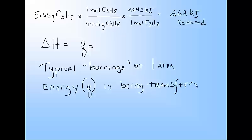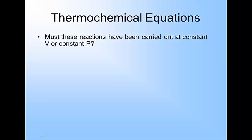So where is it all going? Well, it depends on what you're doing with the propane. Maybe you're cooking meat and this quantity of propane is releasing 262 kilojoules into your meat. Must these reactions have been carried out at constant volume or constant pressure? These reactions are being at constant pressure.